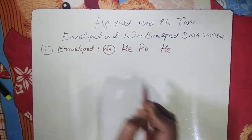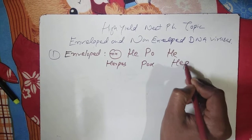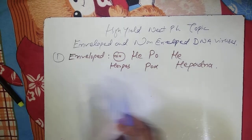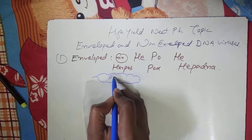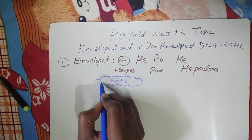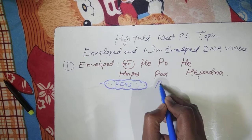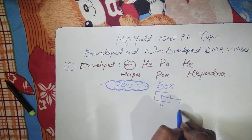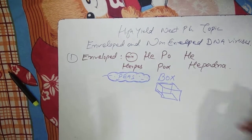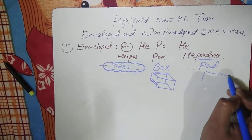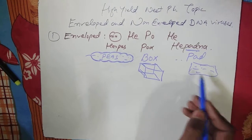For enveloped DNA viruses, the mnemonic is: 'He poor hair herpes box and he partner.' Herpes already has an envelope like peas in a pod. Pox virus — think of it like a box, which is also a kind of envelope. Partner has 'pad' — think of iPad or cotton pad — a kind of cover, so it can also be thought of as enveloped.